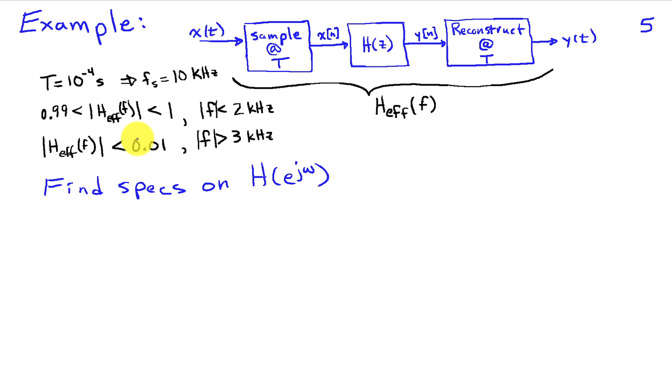we'll require the gain to be less than 0.01. So this represents about 40 dB of attenuation. And for the purposes of this example, we're going to find our specs on the discrete time filter that would satisfy this. However, we'll assume that our sampling and our reconstruction are ideal.